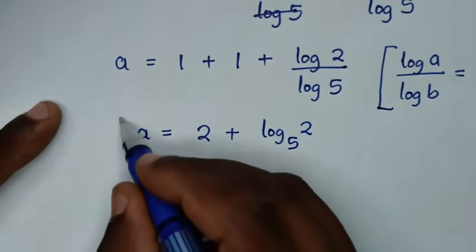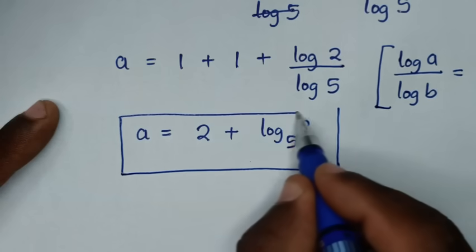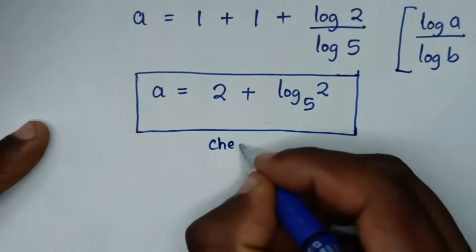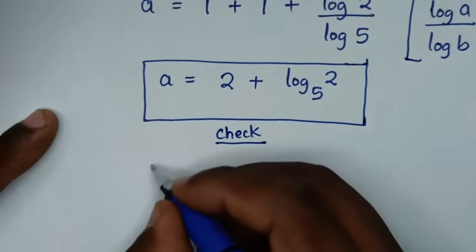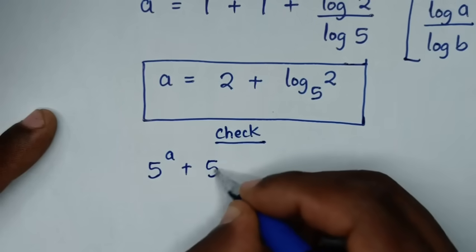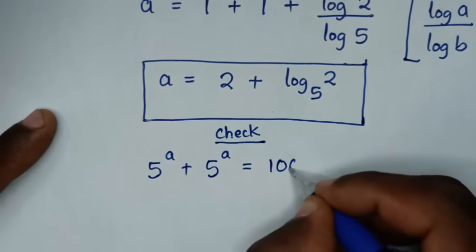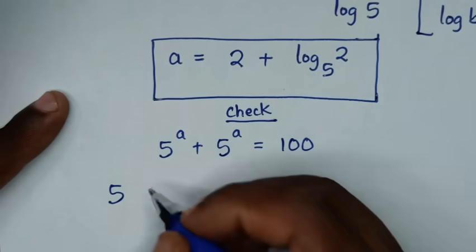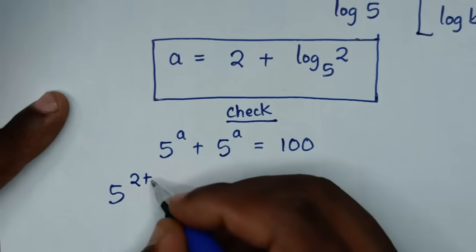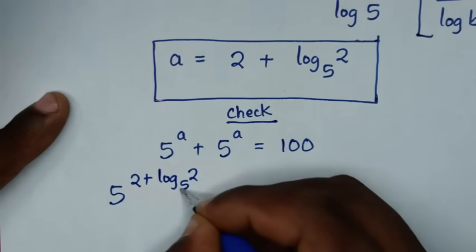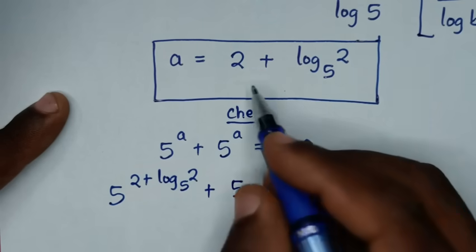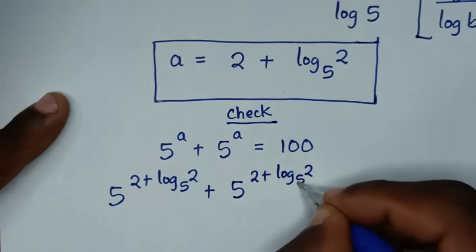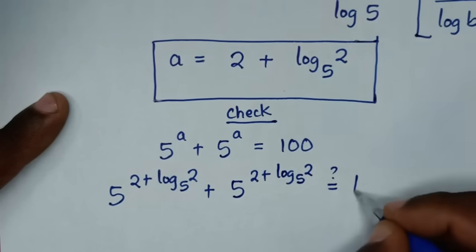So this is the final answer for the value of a in this problem. Now let's check if this answer is correct. From our problem, which is 5 power a plus 5 power a is equal to 100, we substitute a as 2 plus log base 5 of 2, so it will be 5 power of 2 plus log base 5 of 2, plus 5 power of 2 plus log base 5 of 2, is it equal to 100?